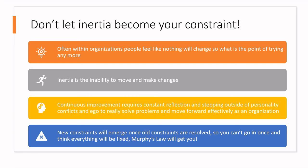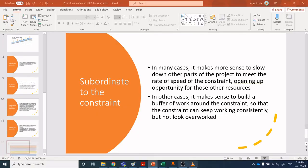Sometimes it's human factors within the system that become the constraint — personality conflicts and ego can be the issue. A big point about TOC and focusing is that new constraints always emerge as soon as old constraints are resolved. You can't do a singular TOC review, fix one constraint, and think everything will be great. As soon as you change the balance within your manufacturing system or project management, something else shifts. Murphy's Law will come and get you, so you need to reevaluate on a routine basis.